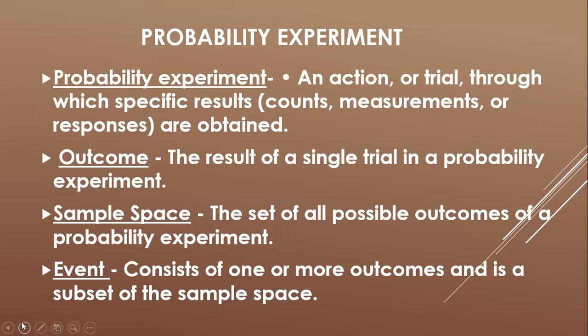We have outcomes — the result of a single trial in a probability experiment. We also have sample space — the set of all possible outcomes of a probability experiment. And we have event, which consists of one or more outcomes and is a subset of the sample space.